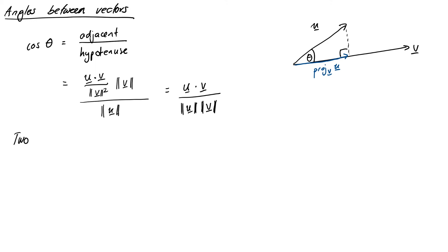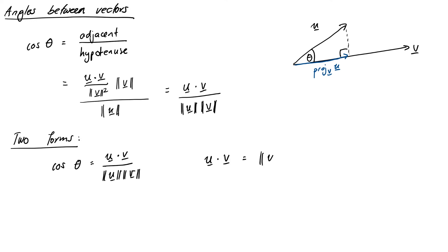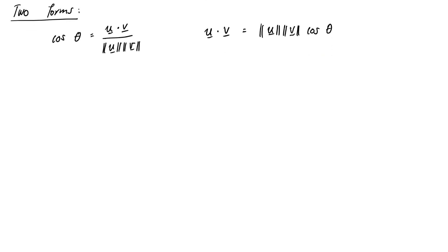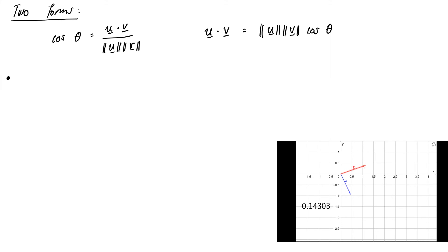There are two ways we often write this formula. We can write it as a formula for cosine theta: cosine θ = u·v over ‖u‖‖v‖. Or we can rearrange it for the dot product, which gives us: u·v = ‖u‖‖v‖ cos θ. Going back to GeoGebra, this geometrical formula gives us a way of interpreting the things we saw with our dot product earlier on.